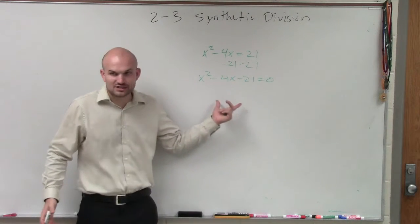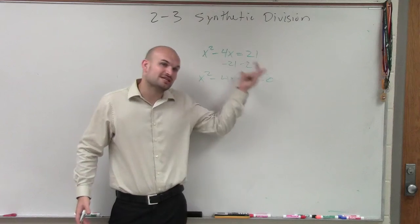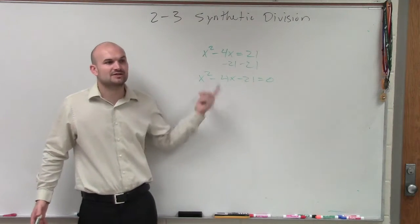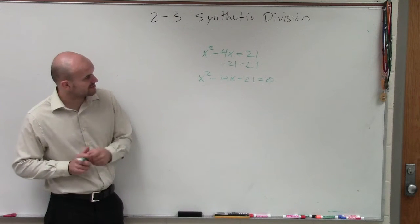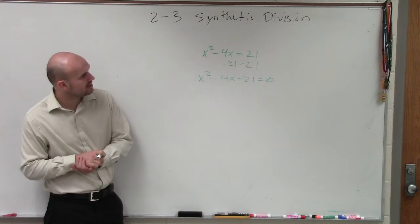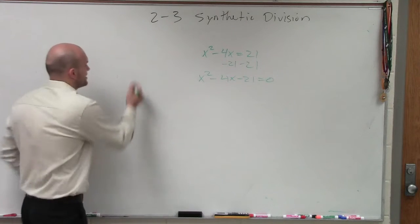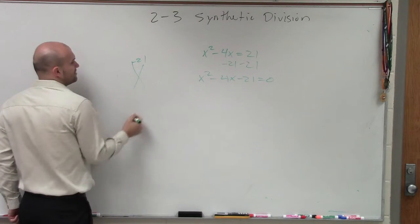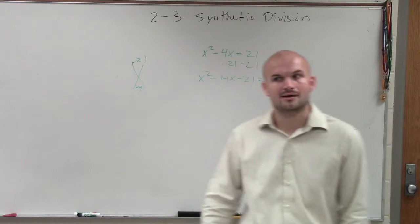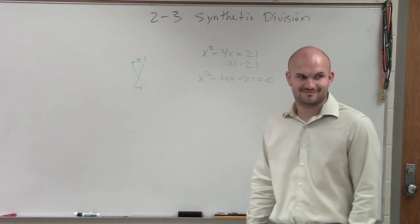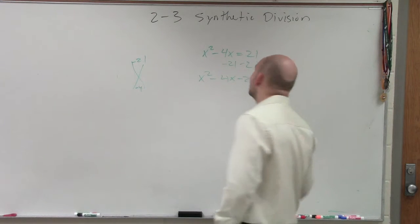Now I have this equation or this expression equal to zero. Now I can factor and apply the zero product property. So now what I'm going to say and do is factor this. So I have x squared minus 4x minus 21. So I need to determine what two numbers multiply to give me negative 21, but then add to give me negative 4. And that answer is negative 7 and positive 3.